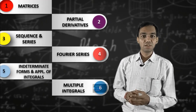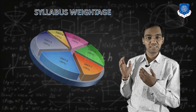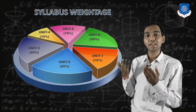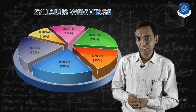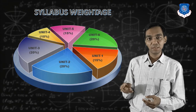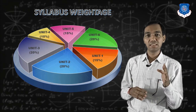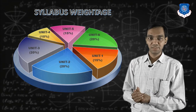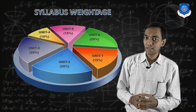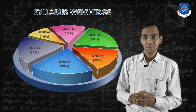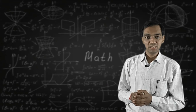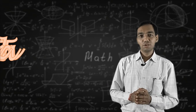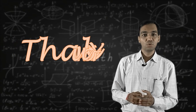Regarding the weightage of the syllabus: Unit 1 has 15% weightage, Unit 2 has 20%, Unit 3 has 20%, Unit 4 has 20%, Unit 5 has 15%, and Unit 6 (multiple integrals) has 20% weightage, as per the GTU syllabus. Thank you for listening. If you have any doubts or queries, feel free to contact me.